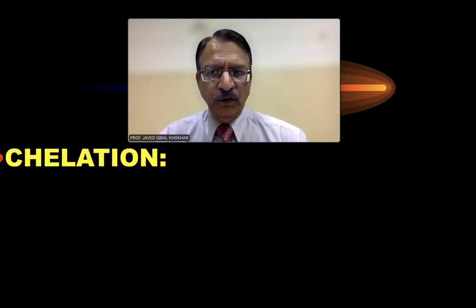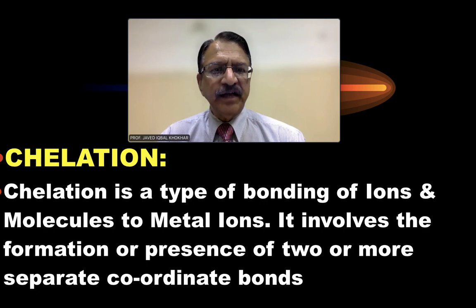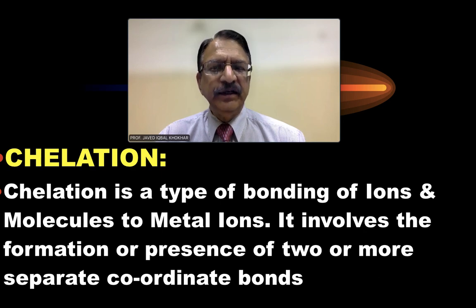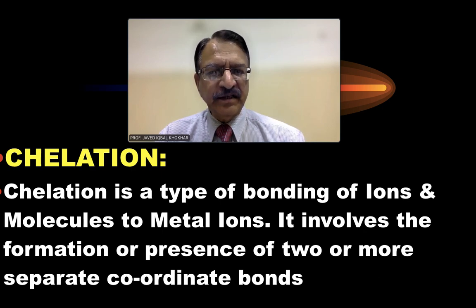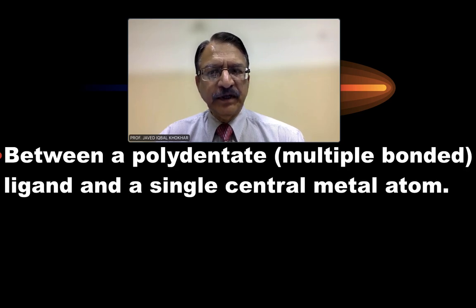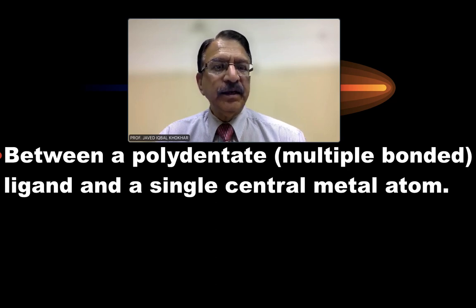Now, what is chelation? Chelation is a type of bonding of ions and molecules to metal ions. It involves the formation or the presence of two or more separate coordinate bonds between polydentate — that is, multiple bonded ligands — and a single central metal atom.